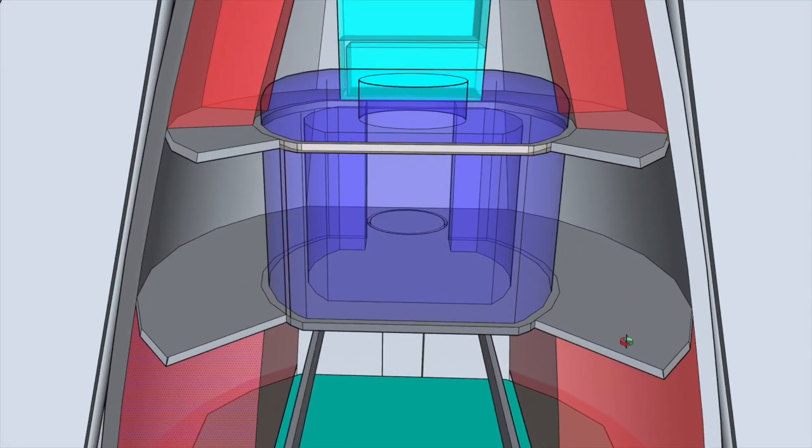So bathing, toiletries, exercise. And all of that surrounds the radiation shelter, which is purpose-built to shelter the whole crew in the event of a solar flare.